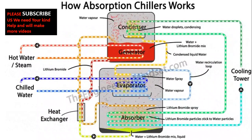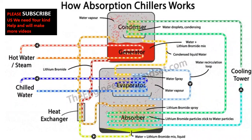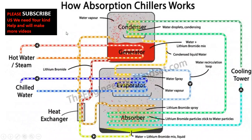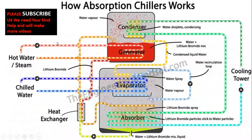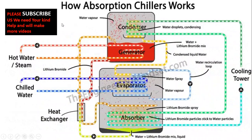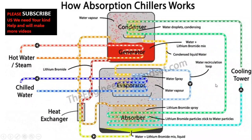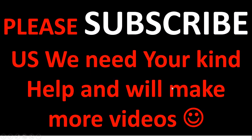We have now explained the components and working principle of the absorption chiller. The principle is based on combining and separating a chemical solution — lithium bromide is combined with water, then separated from it. Please subscribe to our channel for more videos on difficult engineering topics. For any questions, please ask in the comment section. Thank you very much and take care!